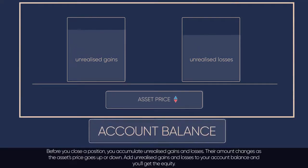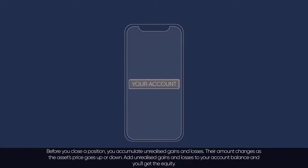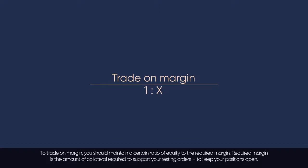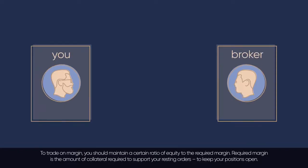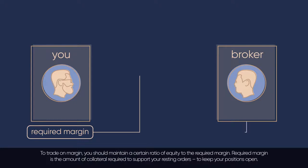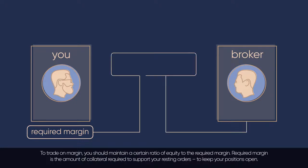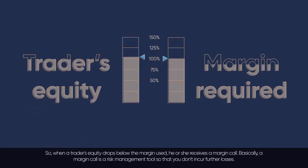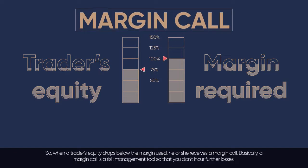Add unrealised gains and losses to your account balance and you'll get the equity. To trade on margin, you should maintain a certain ratio of equity to the required margin. Required margin is the amount of collateral required to support your resting orders and keep your positions open. So, when a trader's equity drops below the required margin, he or she receives a margin call.